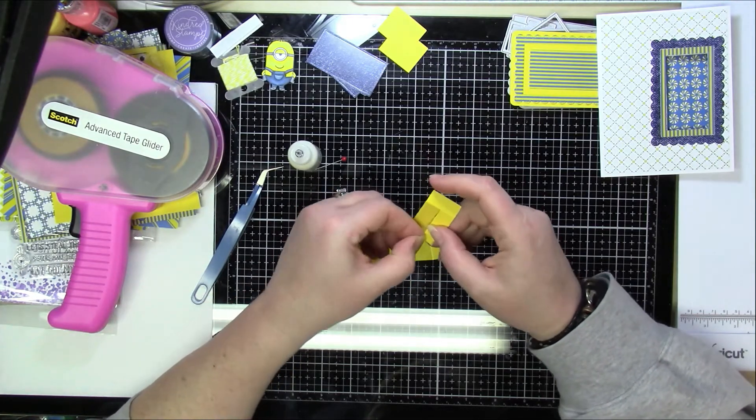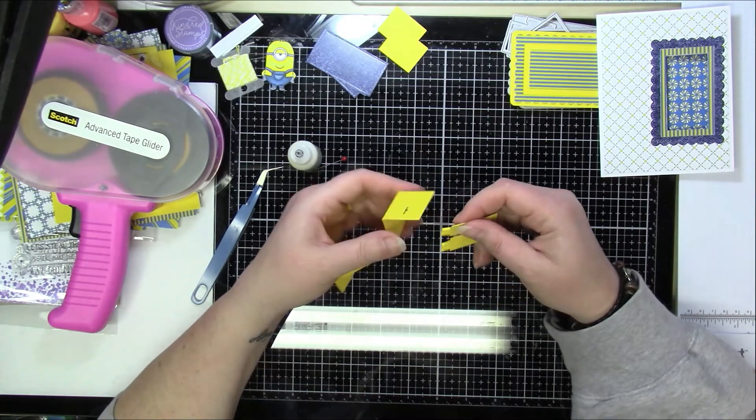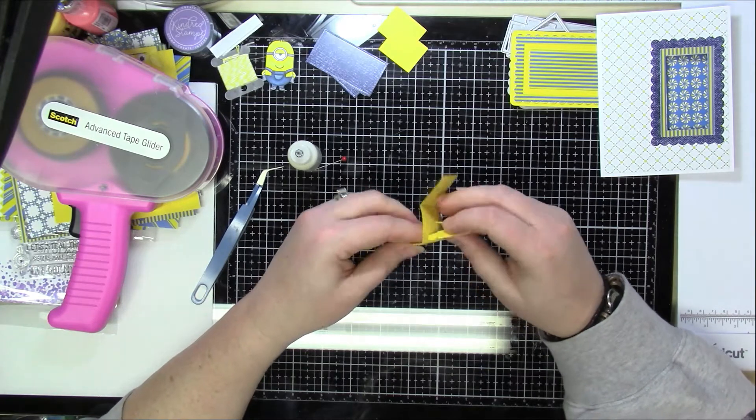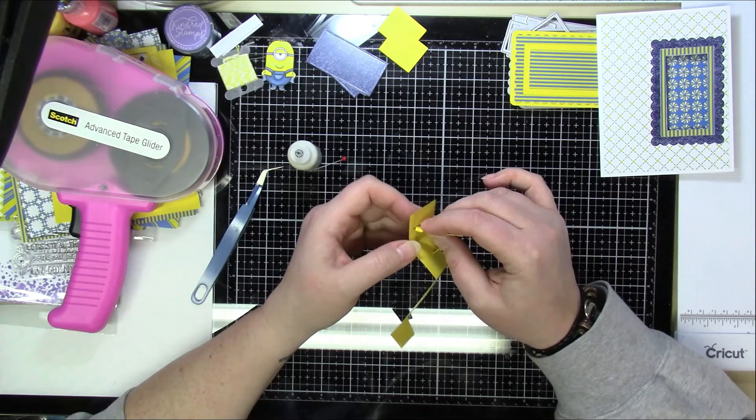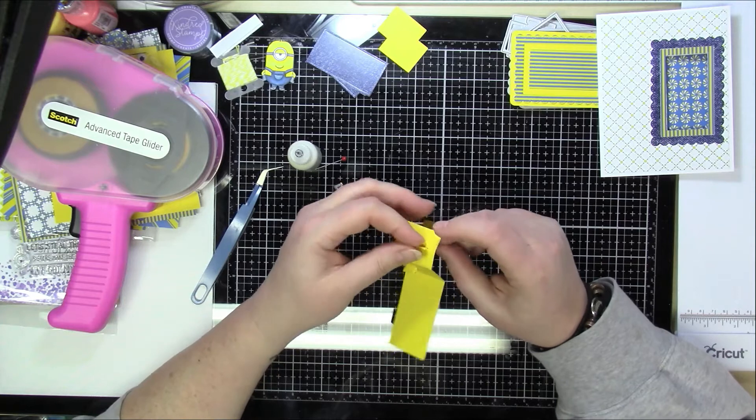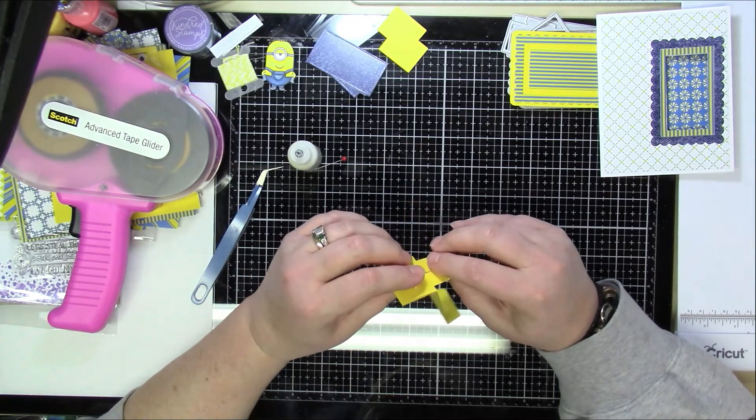And then you're going to put those in the holes in the back of that longer strip. So you're going to pop one in, into that hole, and then the other little slit that's in there. And the die cuts cut these out perfectly so everything fits in there great. And then you're just going to kind of make sure that those are there.